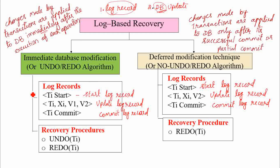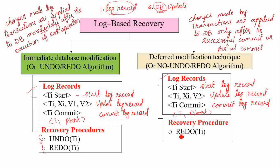In both techniques, four log record types are used: start record, update record, commit record, and abort record. In immediate database modification, two recovery procedures are applied — undo as well as redo — that's why it is known as the undo/redo algorithm. In deferred modification technique, only the redo recovery procedure is applied and there is no undo procedure, which is why it is known as the no-undo, only-redo algorithm.